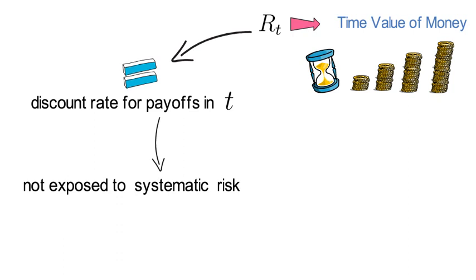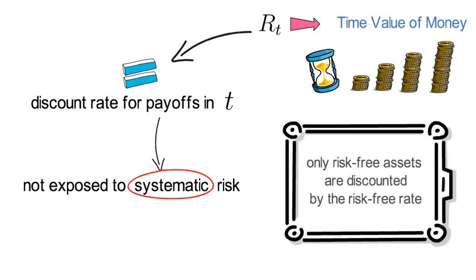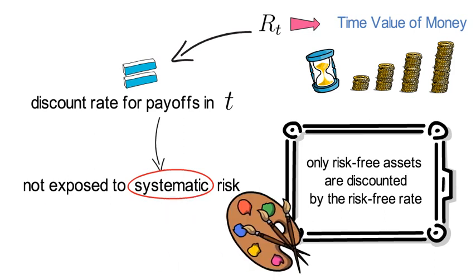That implies that it coincides with the discount rate for payoffs in T that are not exposed to systematic risk. I highlight the word systematic risk. We tend to think that only risk-free assets are discounted by the risk-free rate. That is an incomplete picture.